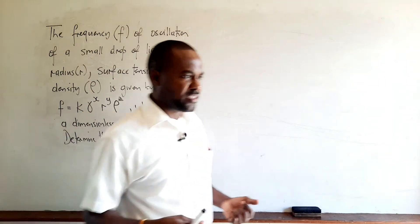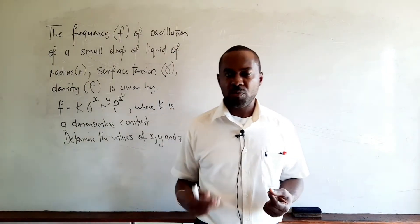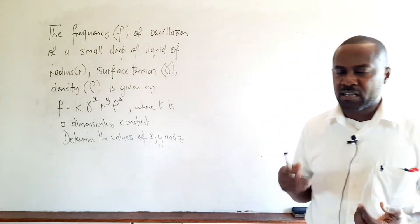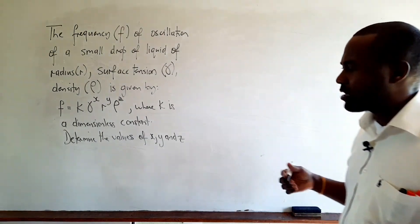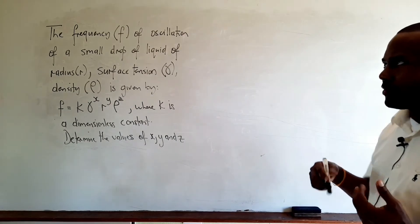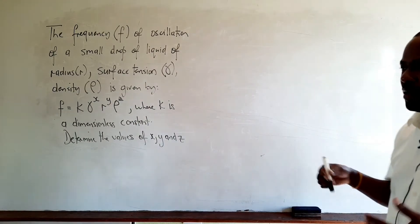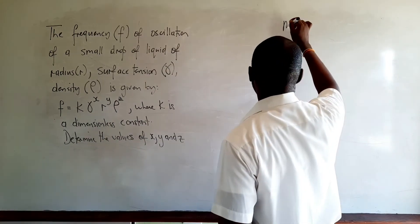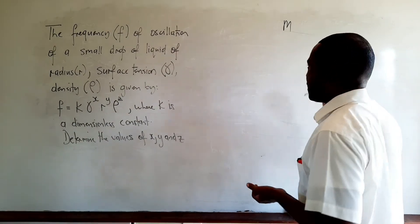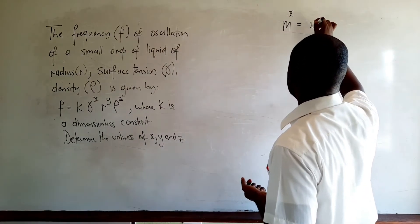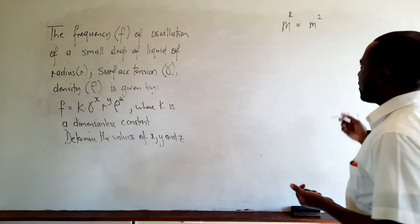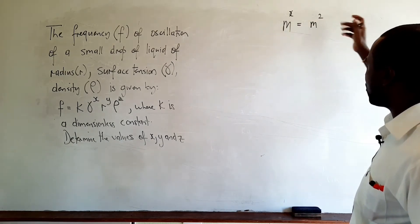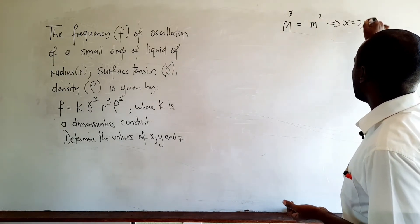We will approach this question on the basis that the equation is homogeneous. If the equation is homogeneous, it means that the base units are identical on either side, and for a particular variable, the power on either side must be equivalent. For instance, if there is meter on the left-hand side raised to the power of x, and there is meter squared on the right-hand side, then because the equation is homogeneous, the power must be equal, and therefore x is equal to 2.